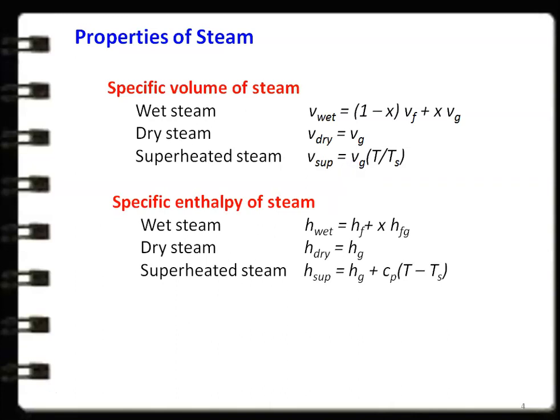The specific enthalpy of wet steam: H_wet = Hf + x·Hfg. For dry steam, H_dry = Hg. And for superheated steam, H_super = Hg + Cp·(T - Ts), where T is the temperature of the superheated steam, Cp is the specific heat of the steam, and Ts is the saturation temperature.